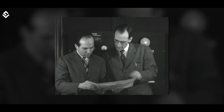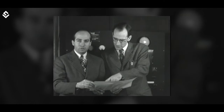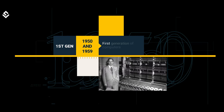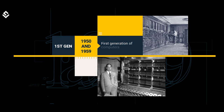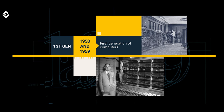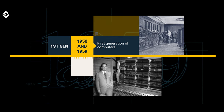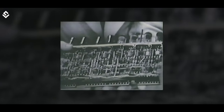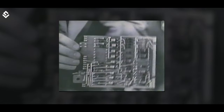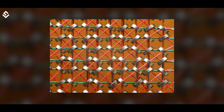This machine started the generation of computers to come. The first generation of computers is said to be the period between 1950 and 1959. Computers used vacuum tubes for logical operations and ring-shaped ferrite cores for memory storage. These computers were bulky and very expensive.